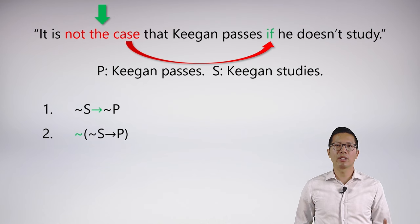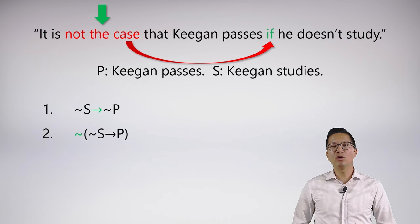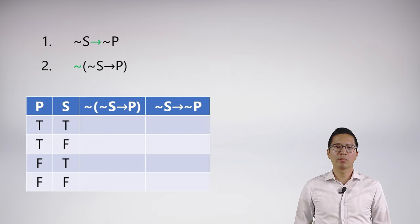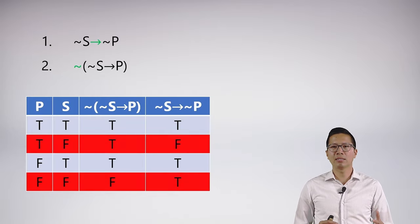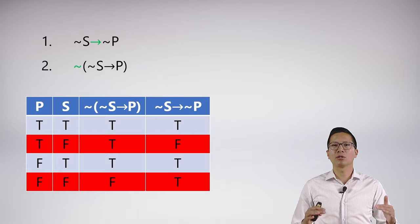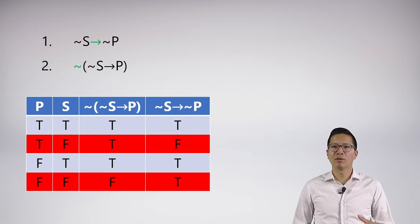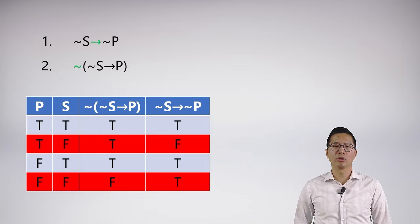So these are two different symbolizations and you might ask, are these logically equivalent? Well, we can prove that they're not pretty straightforwardly by doing a truth table. Not actually going to walk through this, but if you do the truth table you'll immediately see that they're not logically equivalent, which means there are two genuinely unique and different symbolizations and ways of understanding that sentence. And so that's why that sentence is ambiguous.